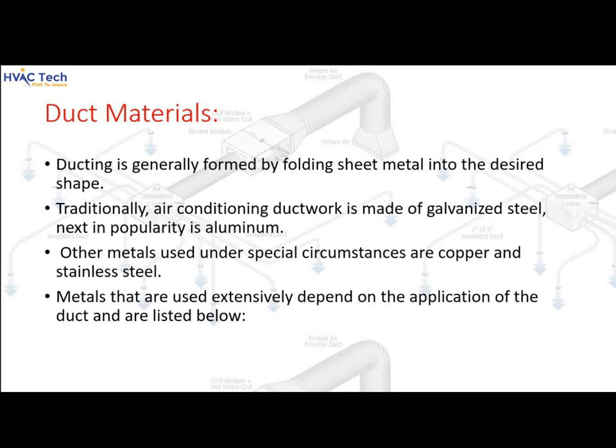Duct materials: ducting is generally formed by folding sheet metal into the desired shape. Traditionally, air conditioning ductwork is made of galvanized steel; next in popularity is aluminum. Other metals used under special circumstances include copper and stainless steel. The metals used depend extensively on the application of the duct.